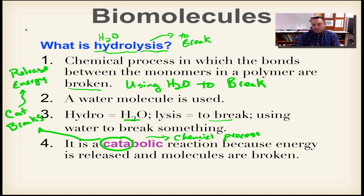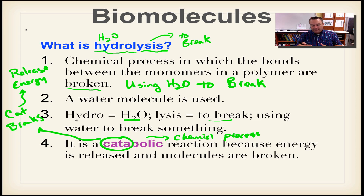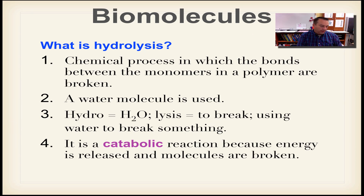Think of it this way: dehydration synthesis is like eating a whole bag of Oreos — you have excess energy and your body stores it as belly fat. That's an anabolic process — you've built new fat molecules. Then when you get on the treadmill, ride your bike, or lift weights, you burn calories by breaking down those fat molecules in a catabolic reaction. Within our body we have coupled reactions: catabolic reactions supply the energy that feeds dehydration synthesis reactions.